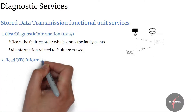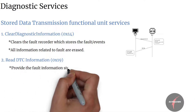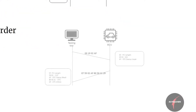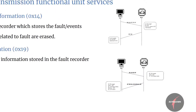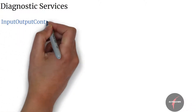Next, we have read DTC information. This service shall provide the fault information stored in the fault recorder of the ECU. The tester usually uses the read DTC information service to get the number of faults stored in the ECU and then to further debug on the faults. These were the two services present in stored data transmission functional units.